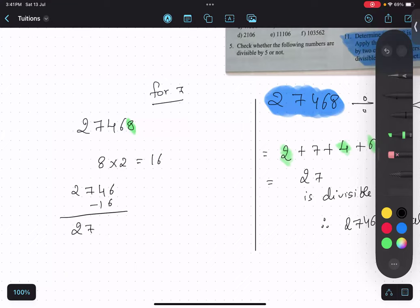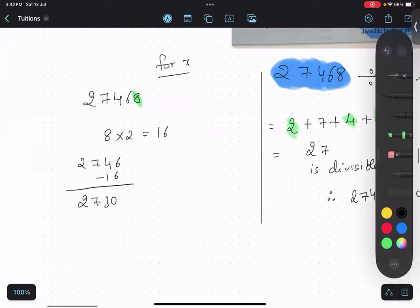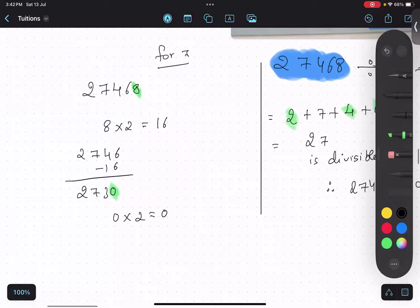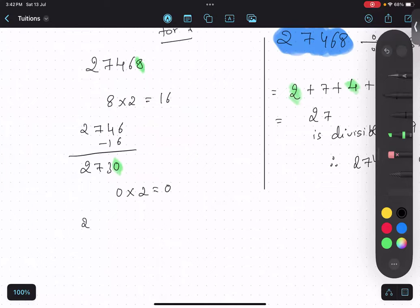We'll follow the same procedure again till the time it is easy to gauge whether it is divisible by 7 or not. So we'll take the last digit, double it, and subtract from the remaining digits. Okay.